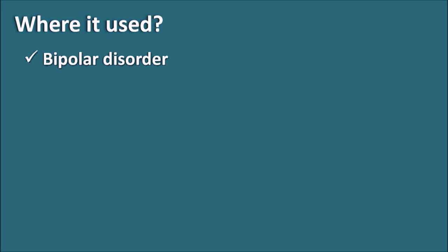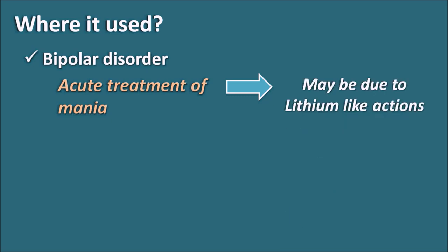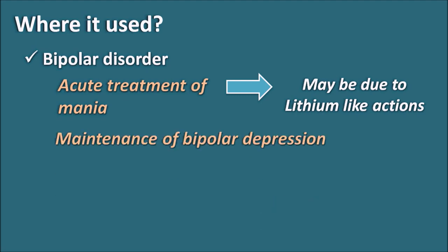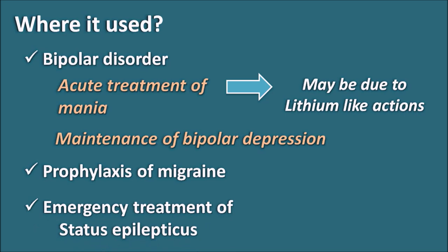Valproic acid is used in bipolar disorder, particularly for acute treatment of the manic phase. Though the exact mechanism is not fully known, the anti-manic action may be attributed to its lithium-like actions on the inositol pathway. It is also used in maintenance therapy for bipolar depression, primarily controlling the manic phase. Additionally, valproic acid is used for migraine prophylaxis by inhibiting prostaglandin synthesis, and as an emergency treatment for status epilepticus — though this is an off-label use.